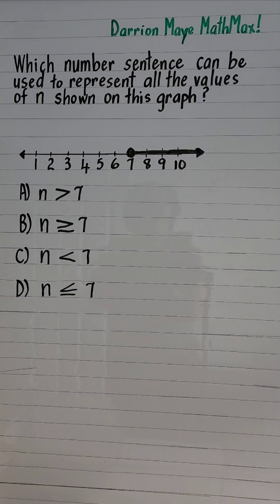So all the values that represent n on the graph are 7 and all the other numbers that come after 7. That means n is 7 and all the numbers that are greater than 7.